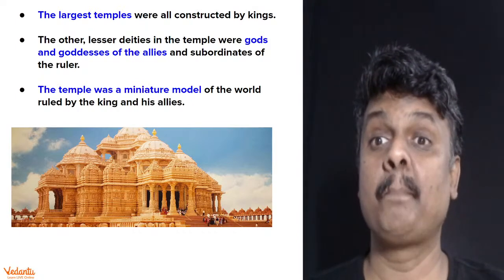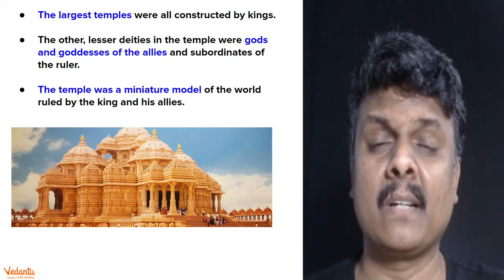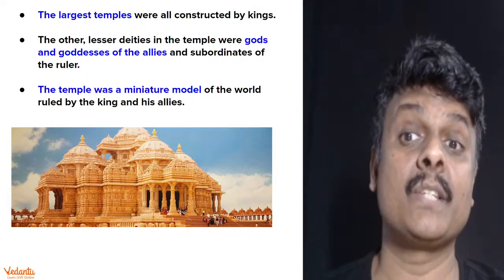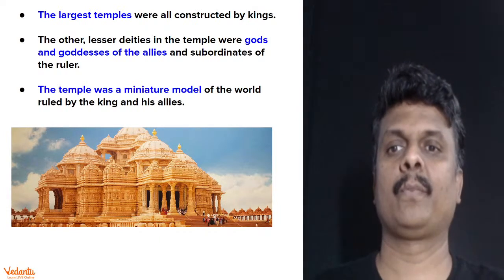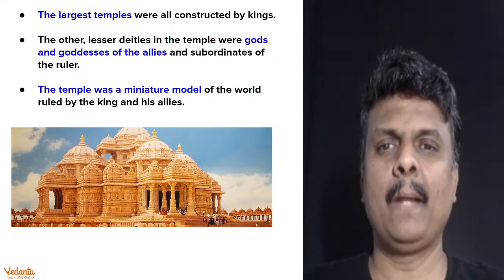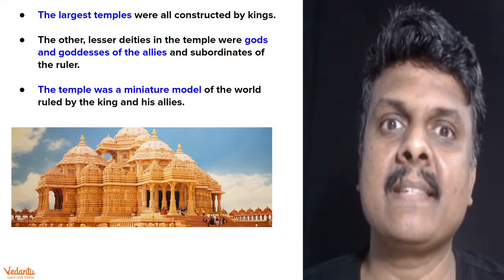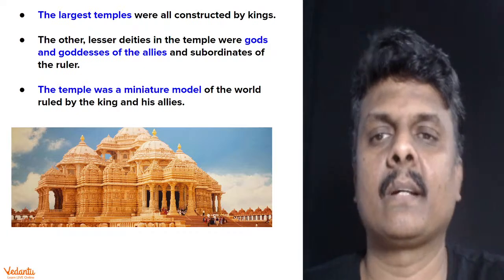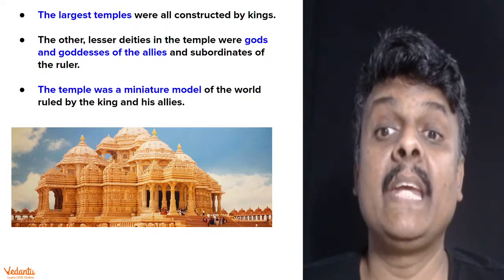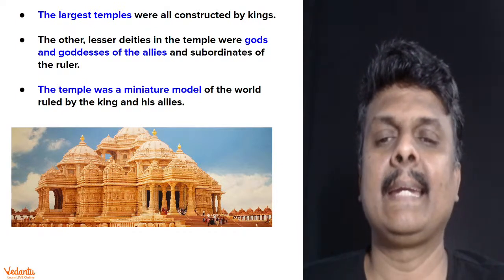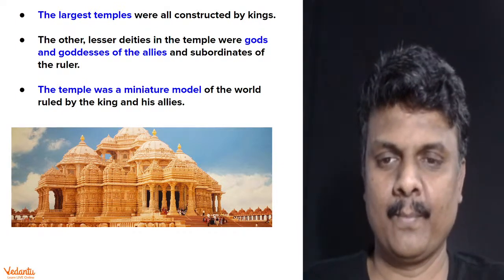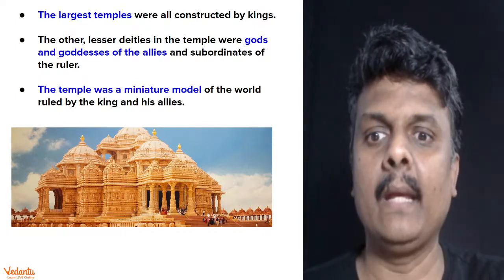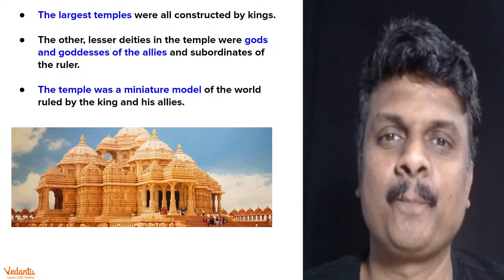The largest temples were constructed by rulers and kings. The lesser deities in the temples were gods and goddesses of the allies and subordinates of the rulers, while smaller temples were constructed by those allies or subordinates. The temple was a miniature model of the world ruled by the king and his allies. Many Jain temples that exist even today resemble this structure.